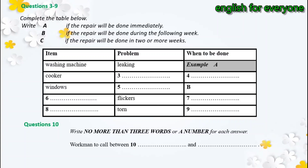And what are the problems that you've been having? Well, no one thing is really dangerous or anything, but it's just been building up. Yes, of course. Well, the first thing is the washing machine. It's been leaking a little and it's beginning to get worse. Because we have a small child and we really need to get that done. Washing machine for immediate repair.